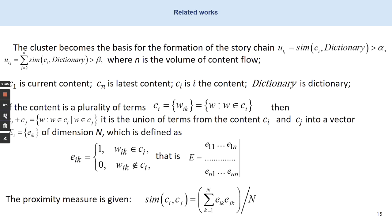The cluster becomes the basis for the formulation of the storage chain. In this formula, N is the volume of content flow, C1 is the current content, Cn is the latest content, and Cg is the content dictionary. If the content is a plurality of terms, then it is the union of terms from content Cg and Ce into a vector of dimension N, which is defined as shown in this formula.